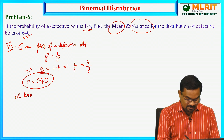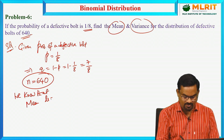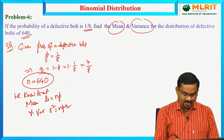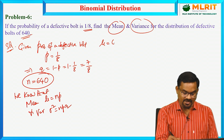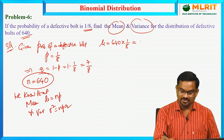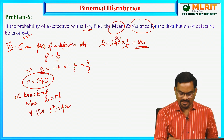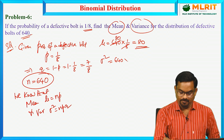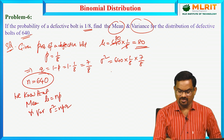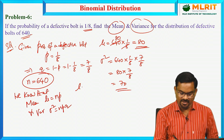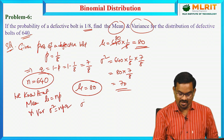We know that the mean of binomial distribution is mu equal to np and variance sigma squared is npq. So here, mu equal to n into p — n is 640 into 1/8, which gives mean equal to 80. And then sigma squared is npq — 640 into 1/8 into 7/8, which is 80 into 7/8, giving 70. Hence, the mean of the distribution is 80 and variance is 70.